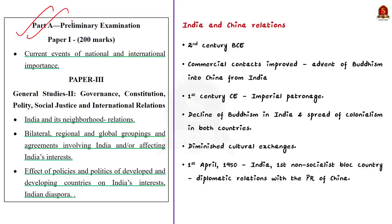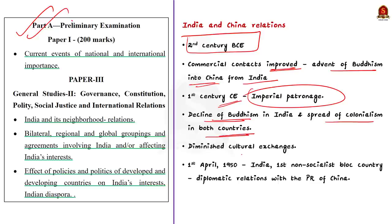The written records of contacts between India and China dates back to the second century BCE. The commercial contacts between India and China at the people's level improved with the advent of Buddhism into China from India in the first century CE. This happened under imperial patronage. Further, the decline of Buddhism in India and the spread of colonialism in both countries resulted in diminished cultural exchanges. However, when people of both the countries started searching for new answers to new questions, old friendships were revived. Note that on April 1, 1950, India became the first non-socialist bloc to establish diplomatic relations with the People's Republic of China.